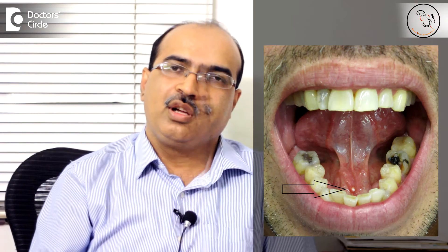The parotid glands are situated in front of your ears, the submandibular glands are situated below your jaw, and the sublingual glands are situated below the tongue — that is, in the floor of the mouth.